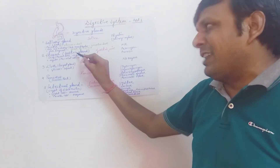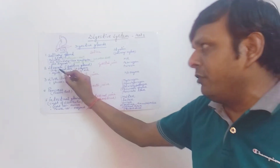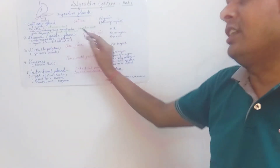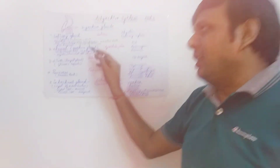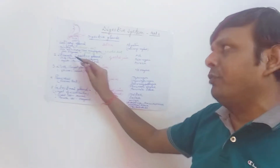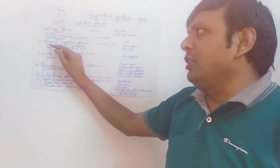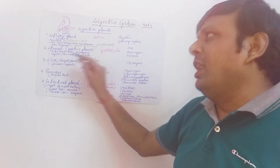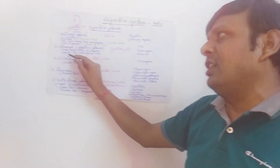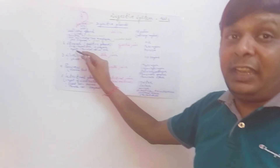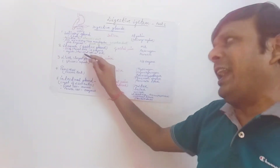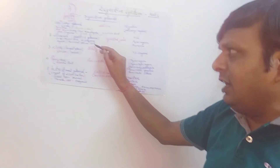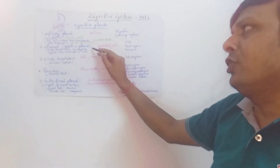The second gland is the gastric gland, located in the wall of the stomach. The gastric gland secretes gastric juice and mainly consists of two different types of cells. One is known as the chief cell or peptic cell, which mainly secretes enzymes. The other type is the oxyntic cell, also tagged as the parietal cell, which secretes HCl.